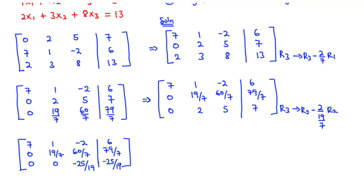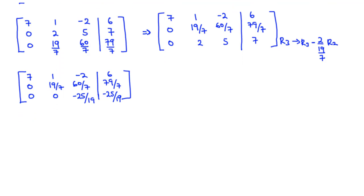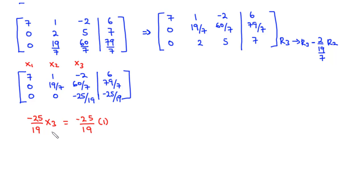Now we perform back substitution. We understand that x1 corresponds to column 1, x2 to column 2, and x3 to column 3. Beginning from row three: (−25/19)·x3 = −25/19. Comparing both sides, we find x3 = 1.